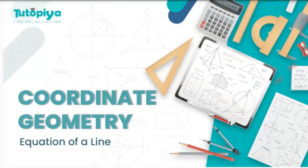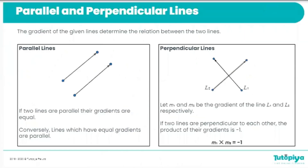Welcome to today's video on Cambridge IGCSE mathematics 0607 and 0580. The topic for today is coordinate geometry, where we will be discussing the subtopic equation of a line. To begin with, we're going to have a look at parallel and perpendicular lines.